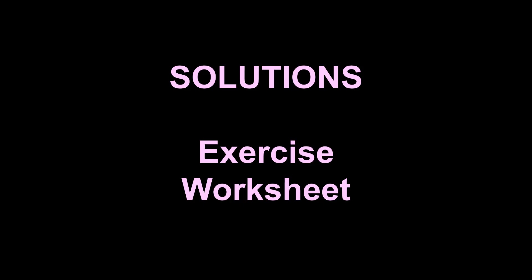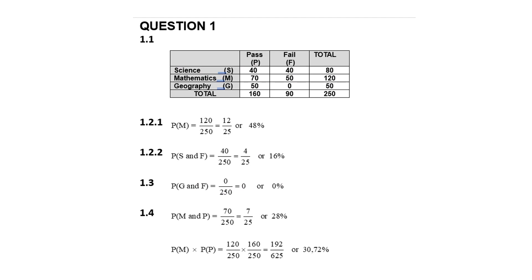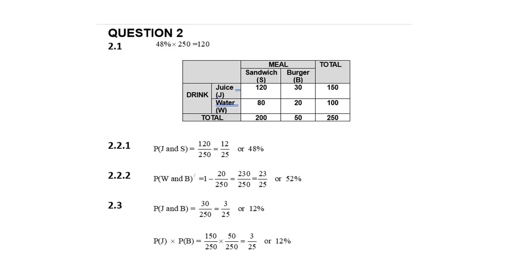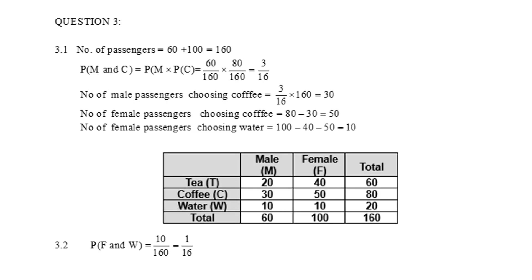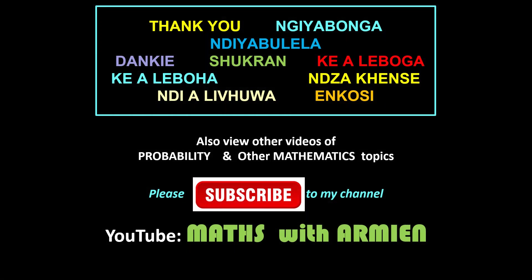Now let's look at the solutions to the exercises. Here are the solutions for question 1 — you may pause and check your answers. Here are the solutions to question 2, and finally the solutions to question 3. If you enjoyed this video on contingency tables and now have a better understanding, please subscribe to my channel, Maths with Armin, and view other videos on probability concepts and other mathematics topics. Don't forget to subscribe and share.